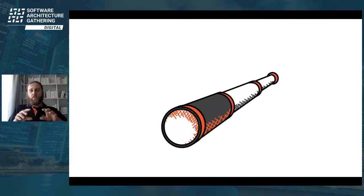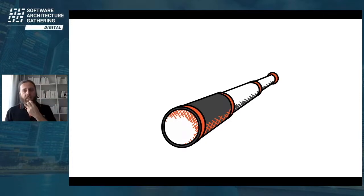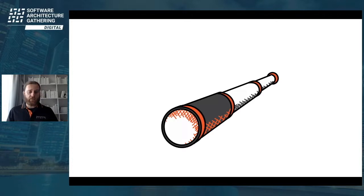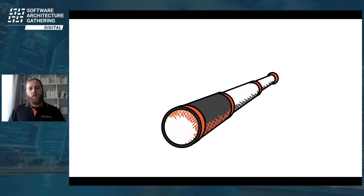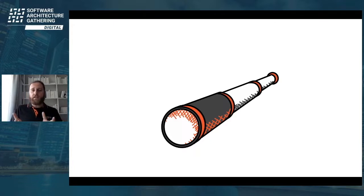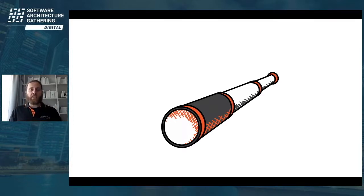Ideas like domain-driven design and its ubiquitous language are important things to support that. Architecture patterns like hexagonal or onion architecture can help us encapsulate the most important aspects of our systems and separate them from the less important, technical things. We try to separate the technical stuff from the business stuff inside our architecture. As we grow, we have the opportunity to build teams and structure their collaboration around the different domains and contexts we are working in.